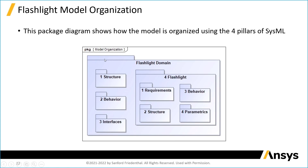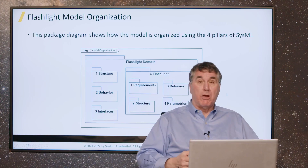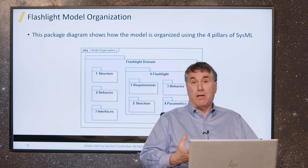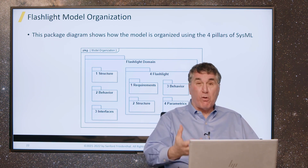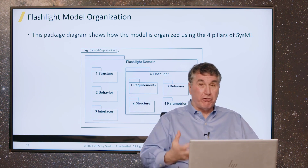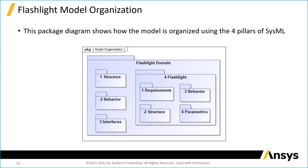You can see this top-level package called the flashlight domain that contains nested packages. Within each package is either more packages at the next level, ultimately containing model content — like those blocks, those requirements, those activities, those states, those use cases, etc. In this case, the flashlight domain package has a structure, behavior, and interfaces package.